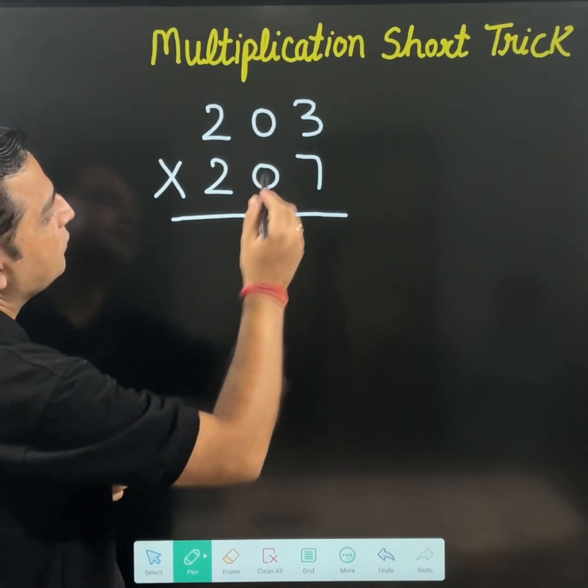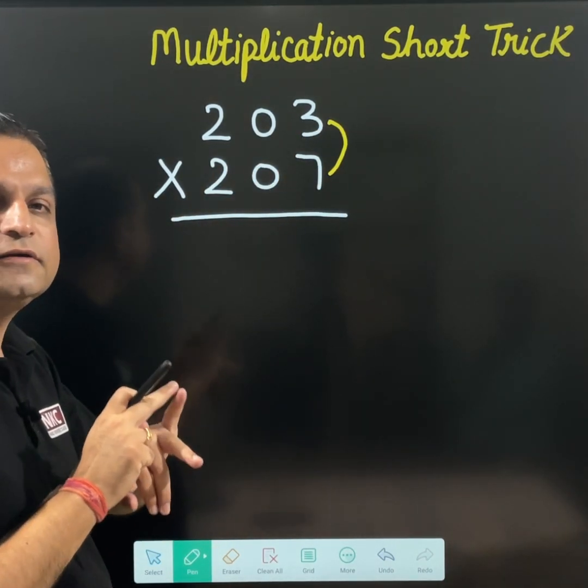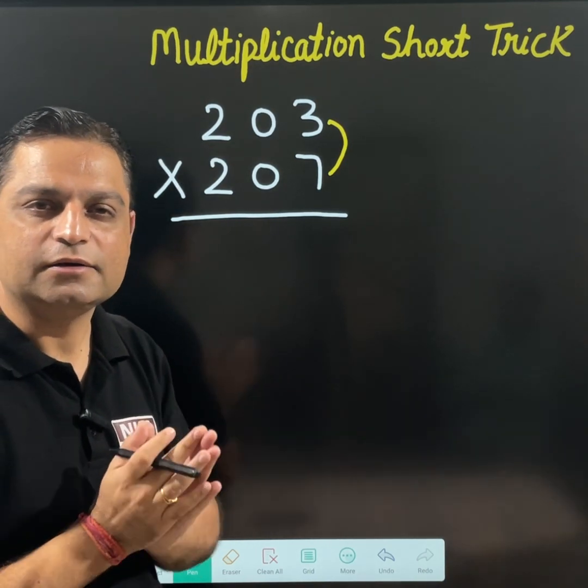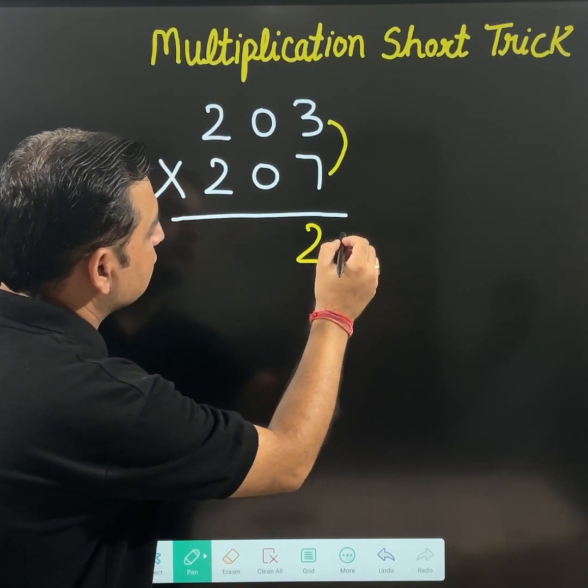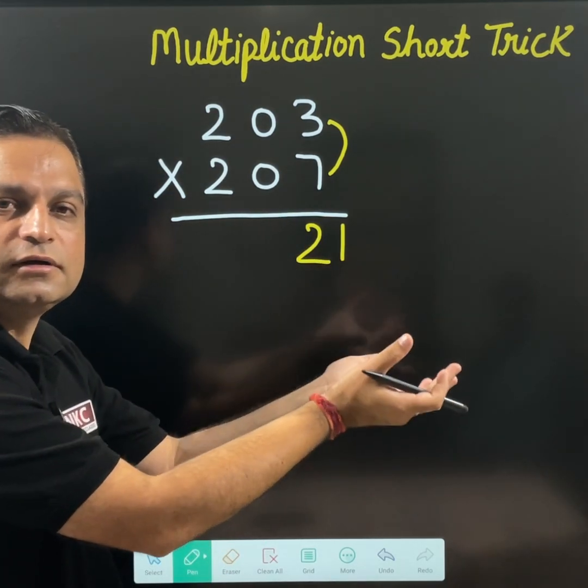Check the last two digits, 3 and 7, just multiply them. 3 multiply 7 is 21. I have written on the right side.